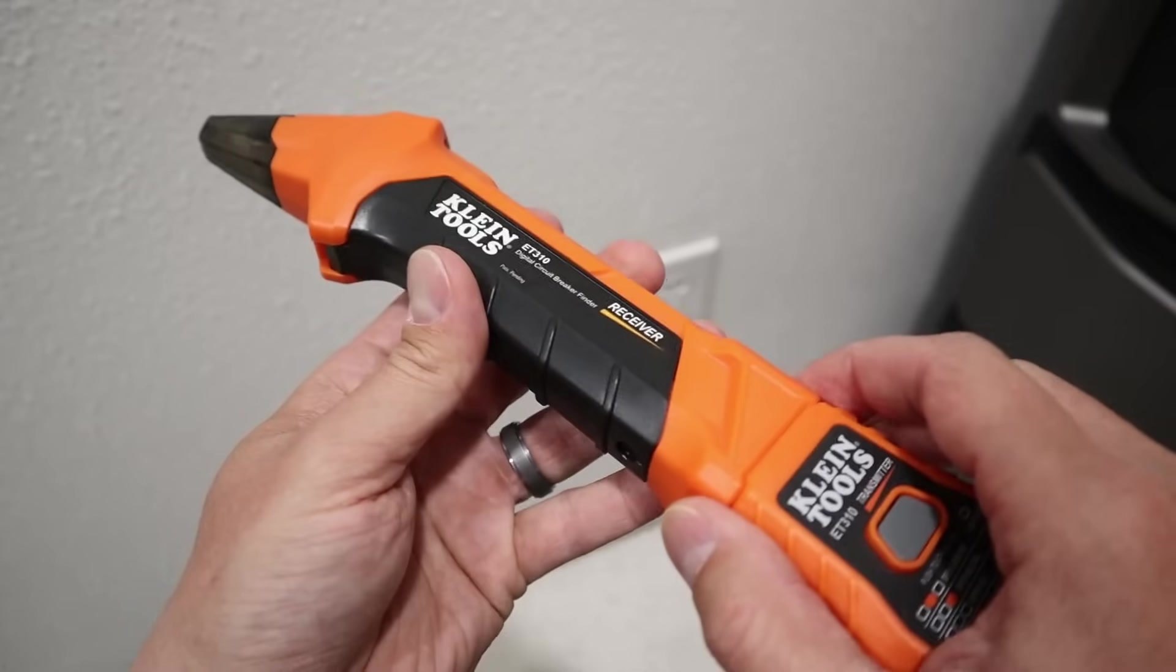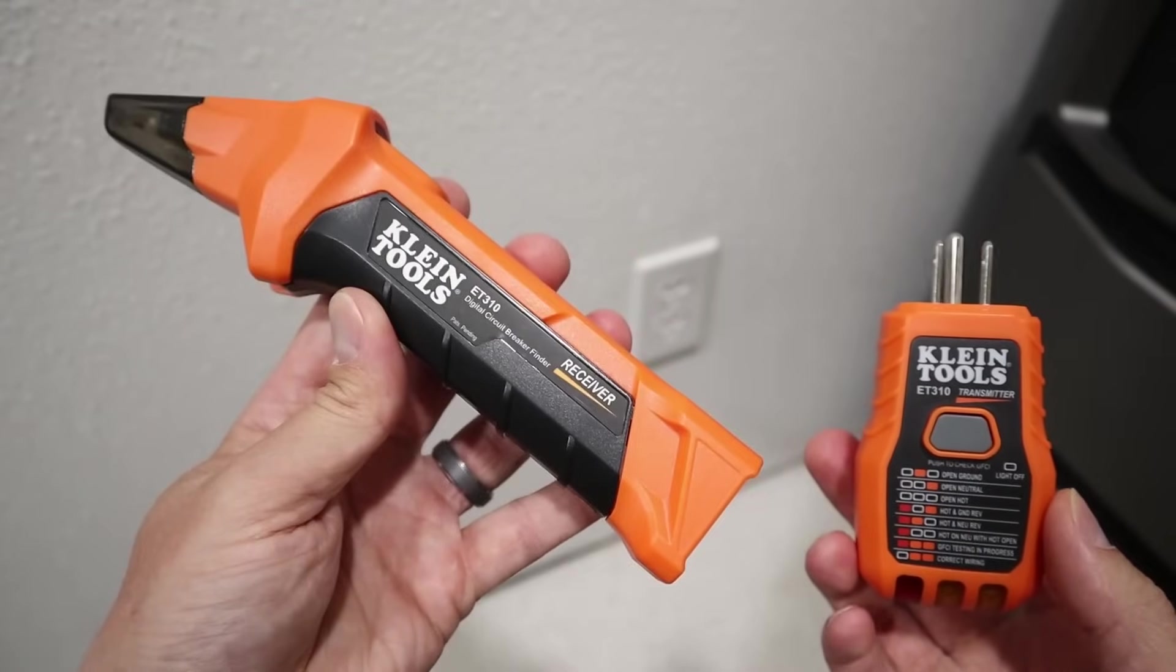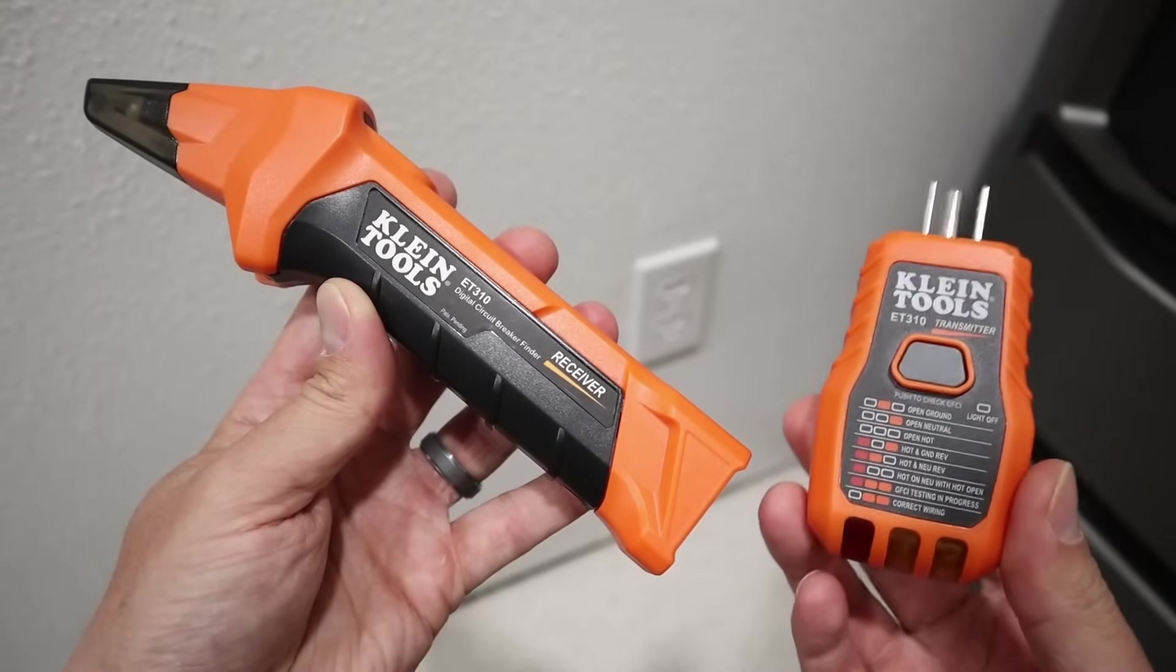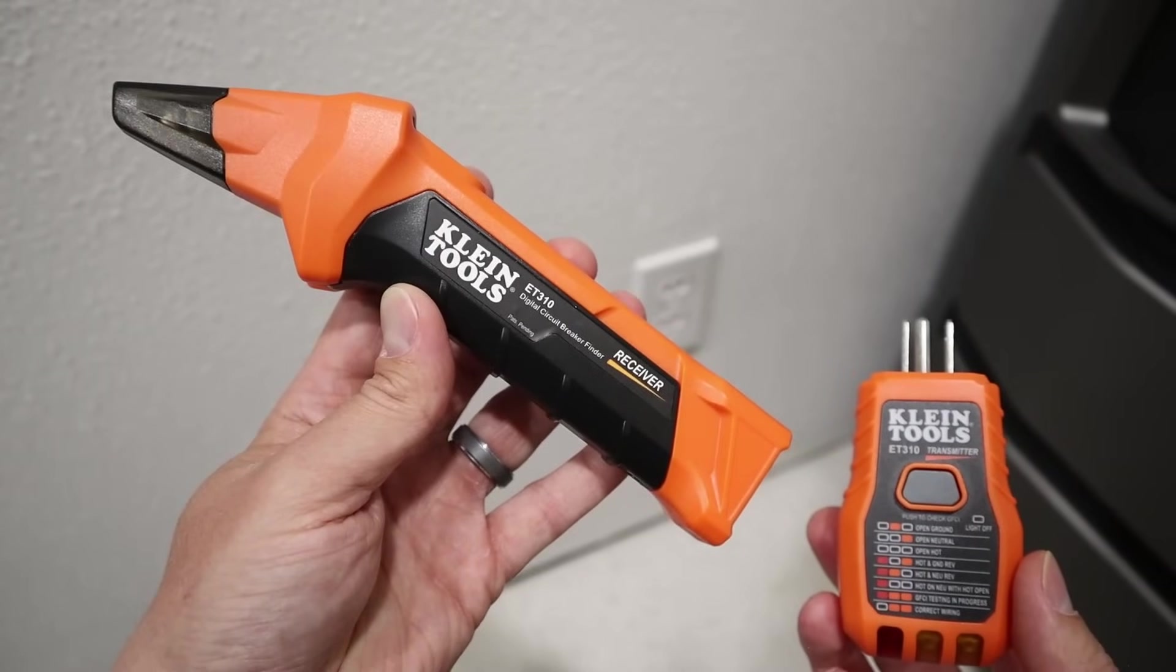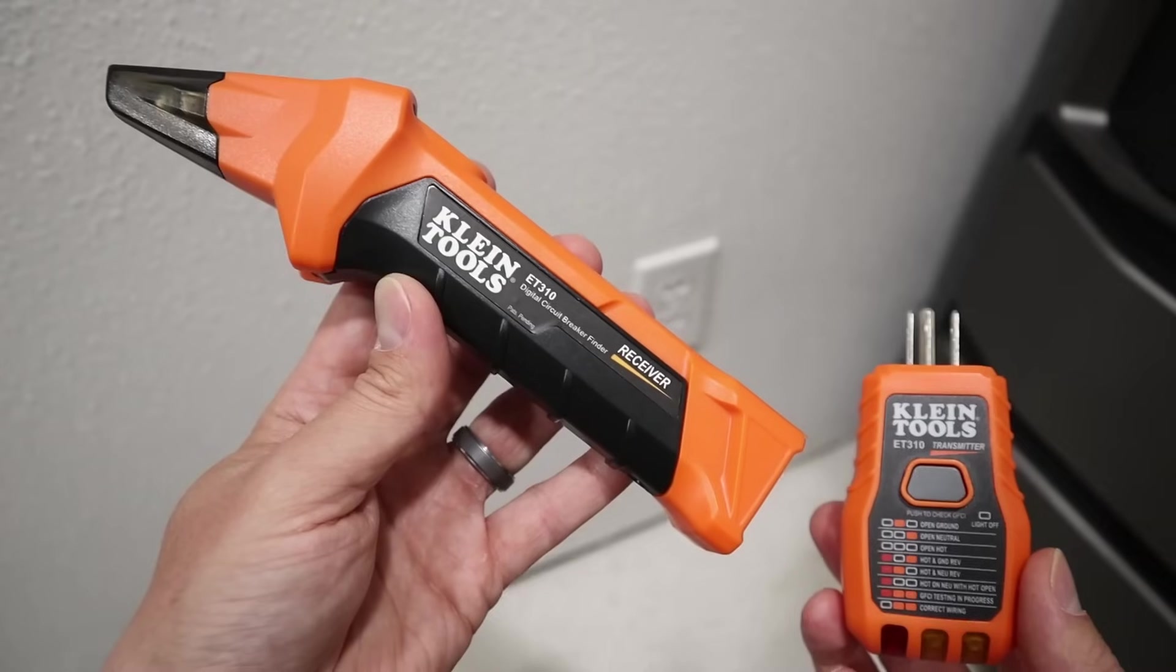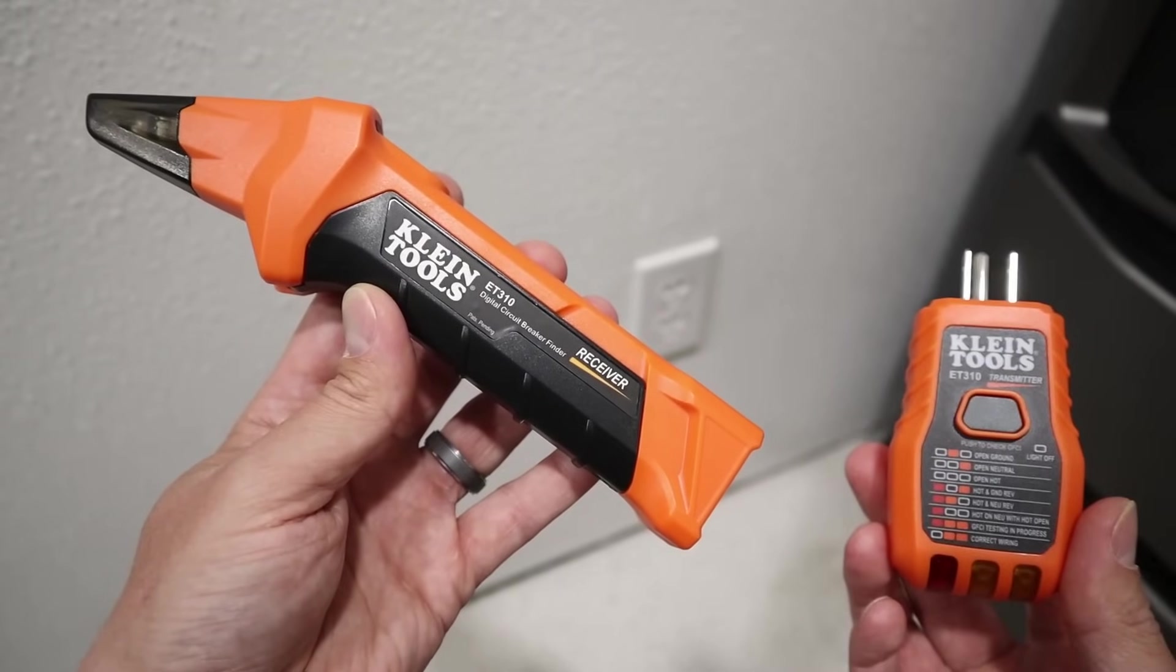This tool right here was an absolute lifesaver when it came to organizing my main power panel and figuring out what each circuit breaker did. This is from Klein Tools. This is their digital circuit breaker finder. So you have a receiver and a transmitter. You take the transmitter right here, you go and plug this into an outlet, then you go to your main power panel, and you scan your circuit breakers until it starts to flash and beep, and that means that you've found the circuit that that outlet is connected to.